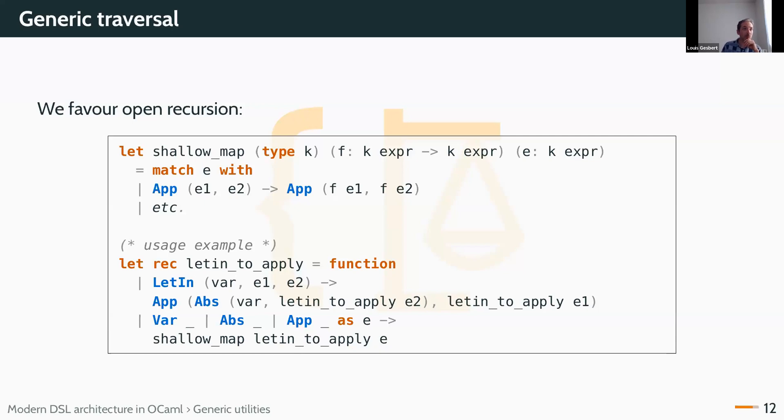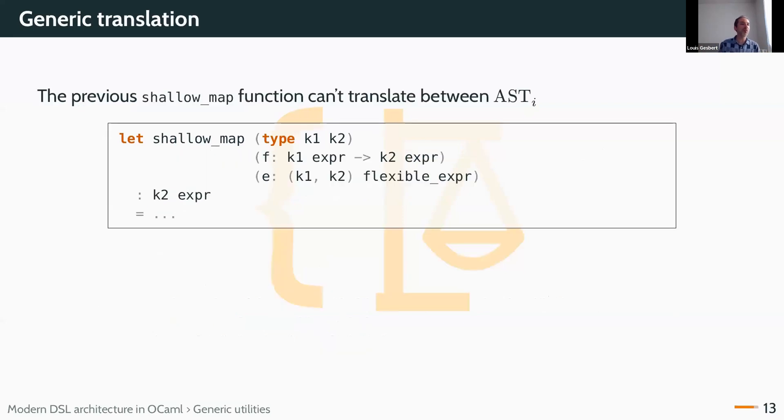Because here, it just only translates from one k to the next. The interesting functions I'll have to deal with will actually be the ones that translate from one AST to the next. I wouldn't be able to use that. There is a trick, which slightly complexifies the type.